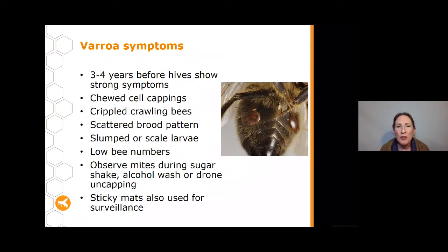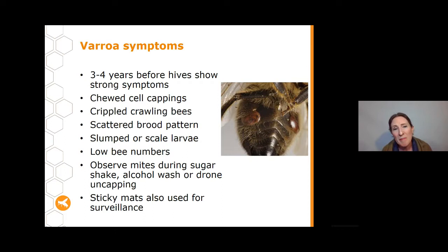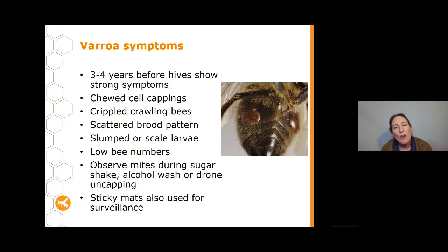What are the symptoms of Varroa? Unfortunately, you often don't see real strong and obvious symptoms for two to four years after they might start infesting your hive, so it can be quite a long time before you notice if you're not looking carefully. Some signs include cell cappings on the brood that look chewed, bees that are crippled or crawling and unable to fly, a scattered brood pattern, and larvae that are slumped in their cells or have turned into a hard scale.